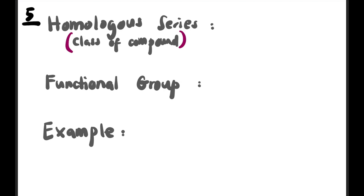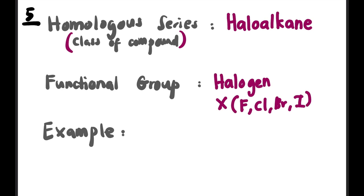The fifth homolog series is haloalkane. Its functional group is a halogen — X, which can be F, Cl, Br, or I. Examples include CH₃Cl (with Cl as the functional group) or structures containing Br. When identifying, simply circle the halogen as the functional group.